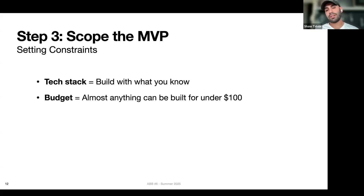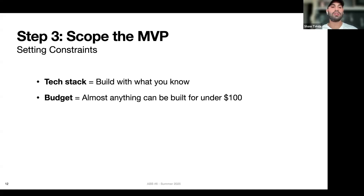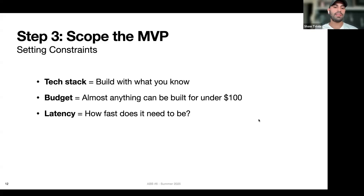The other constraint is budget. Basically, anything you want to build can be built for under $100, and that's actually a very big budget for a lot of MVPs. For example, the Y2B app I created — the most expensive thing was getting the domain, which was about $50. Running all the experiments and actually running the app was very cheap.